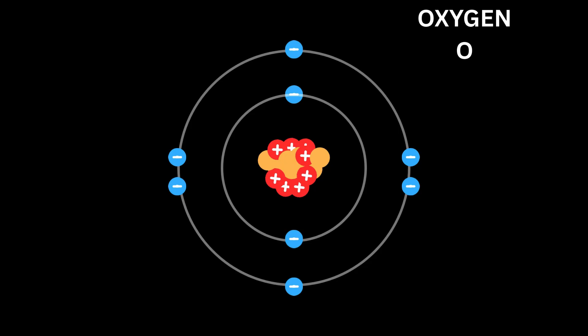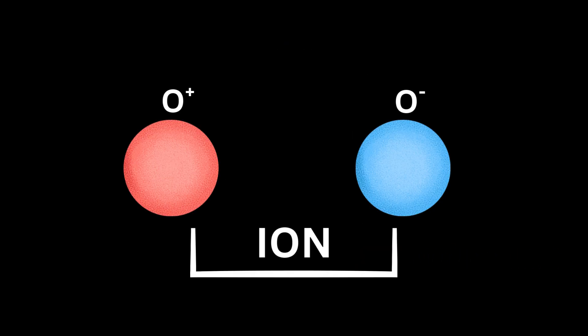However, atoms can lose electrons and become positively charged, or gain electrons and become negatively charged. These charged atoms are called ions.